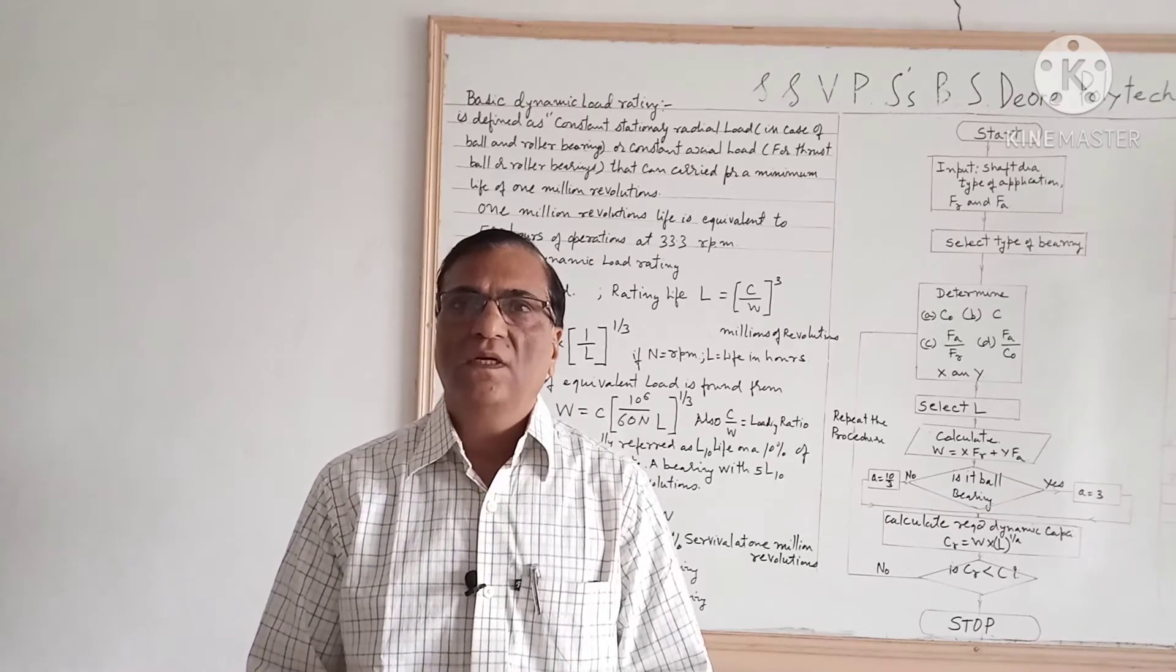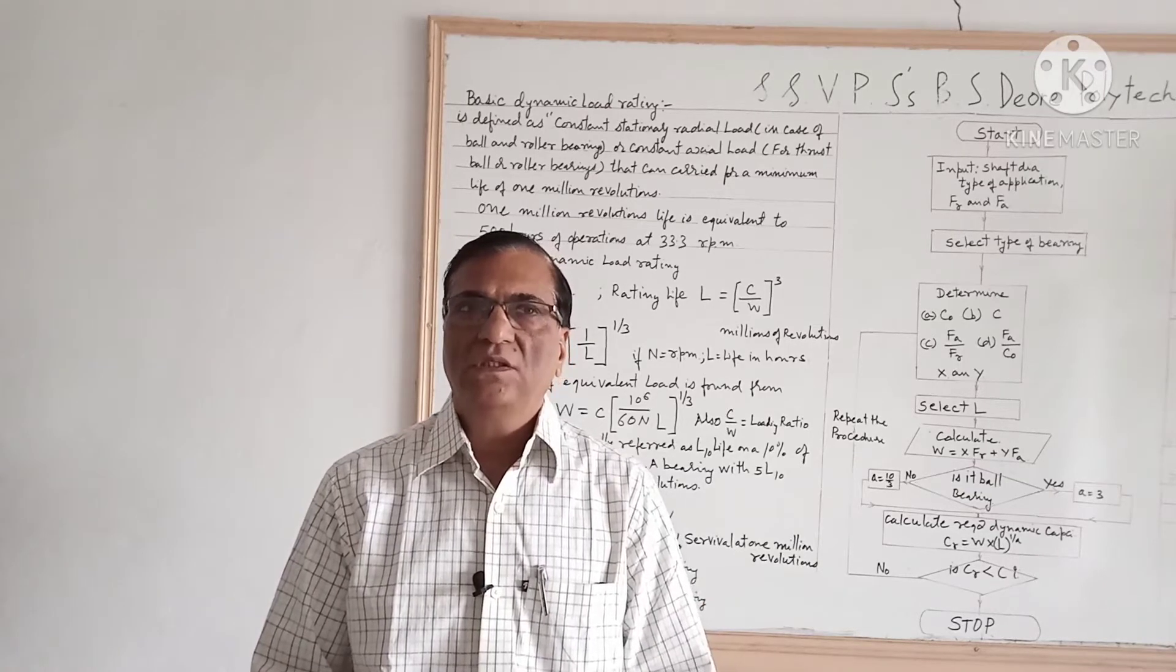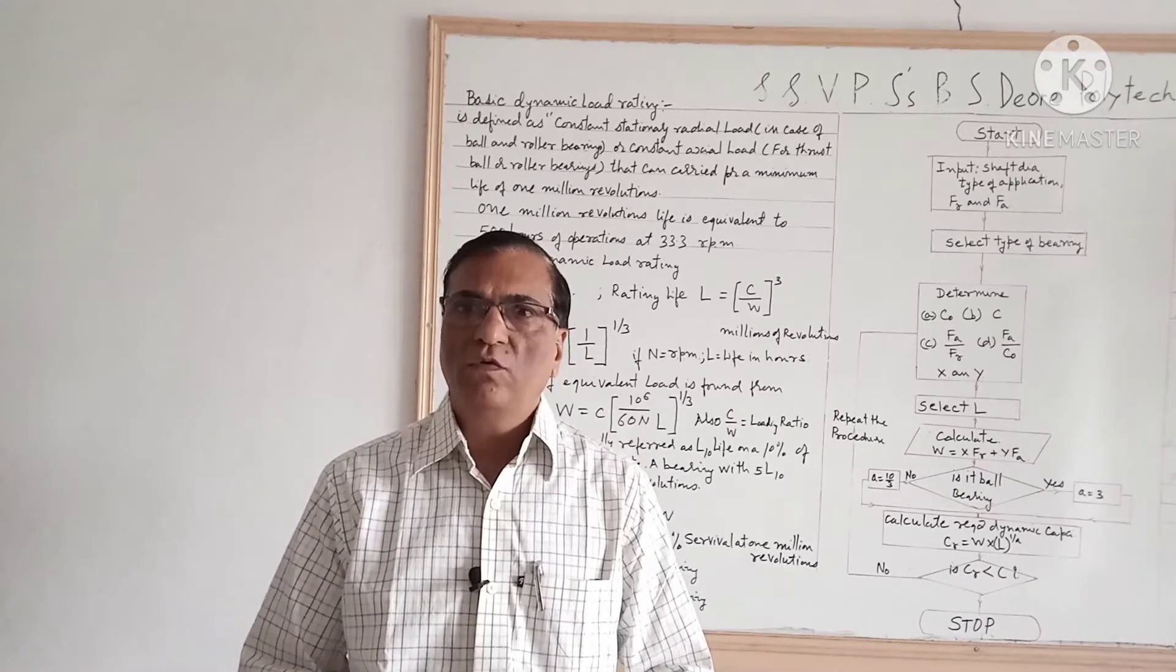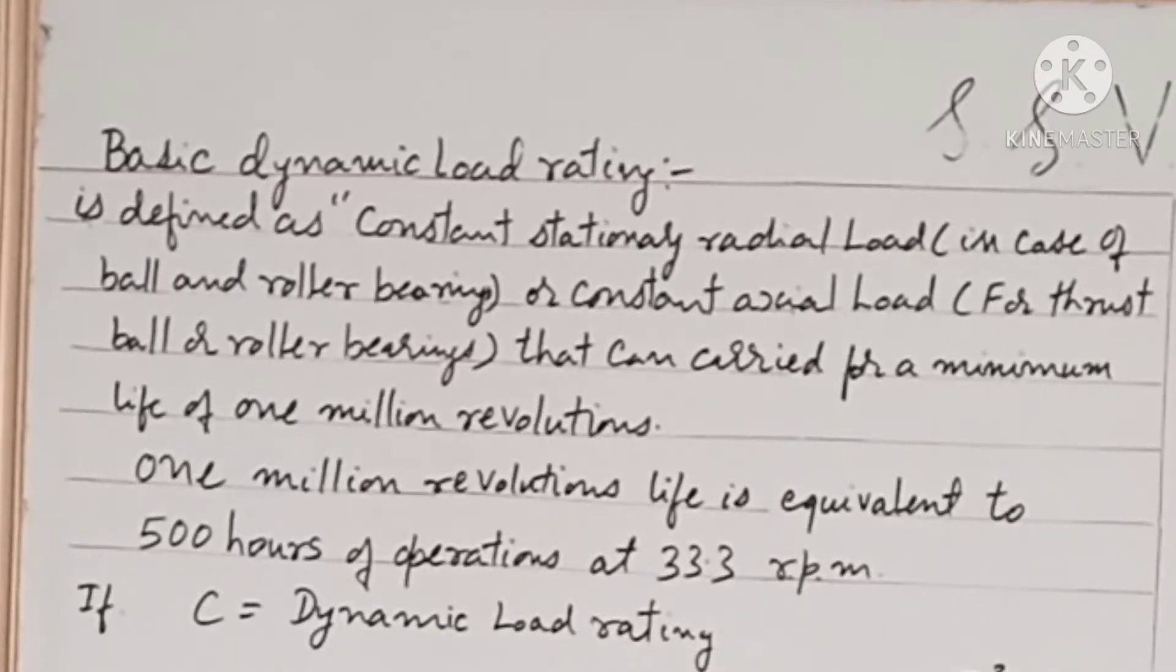The dynamic load capacity is very important in case of bearing because bearings are always in running conditions which are mounted on the shaft. Basic dynamic load rating is defined as constant stationary radial load in case of ball and roller bearing or constant axial load for thrust ball or roller bearings that can be carried for a maximum life of one million revolutions.